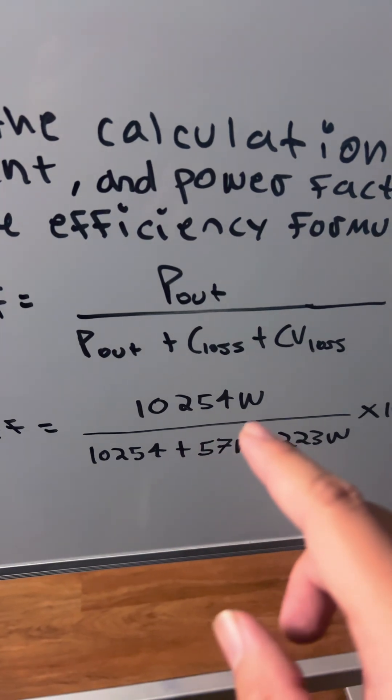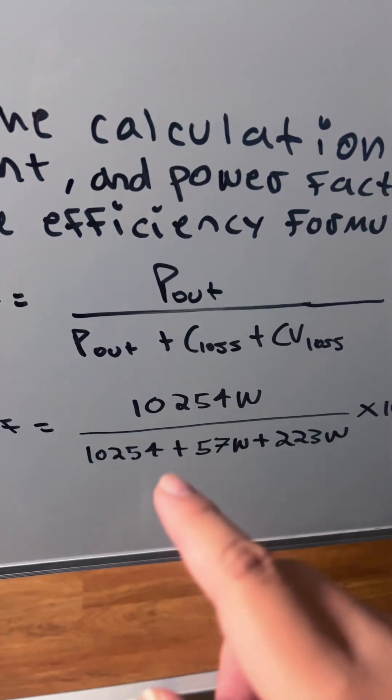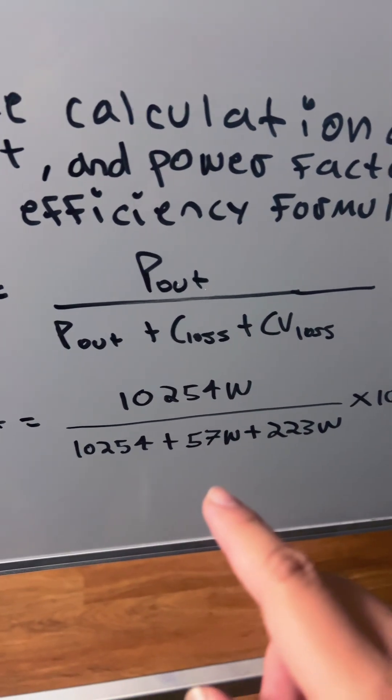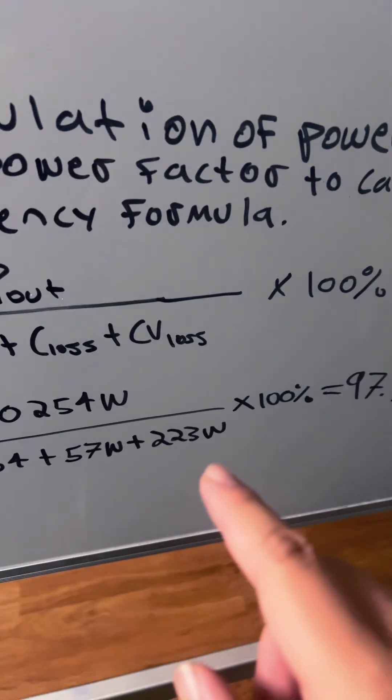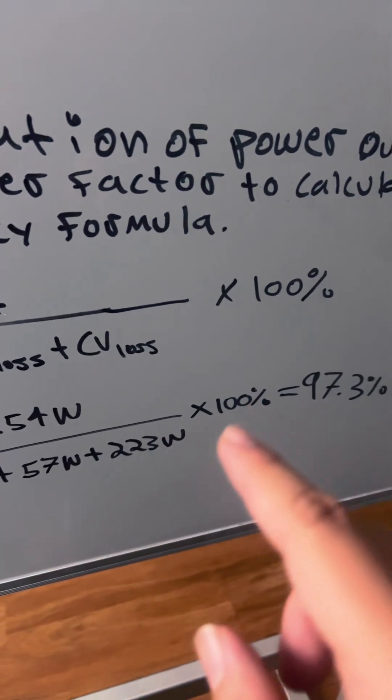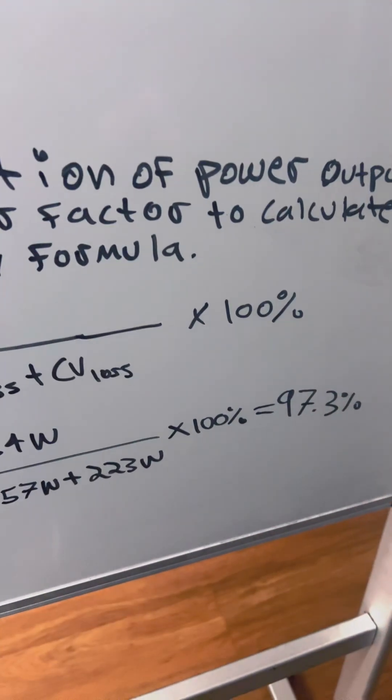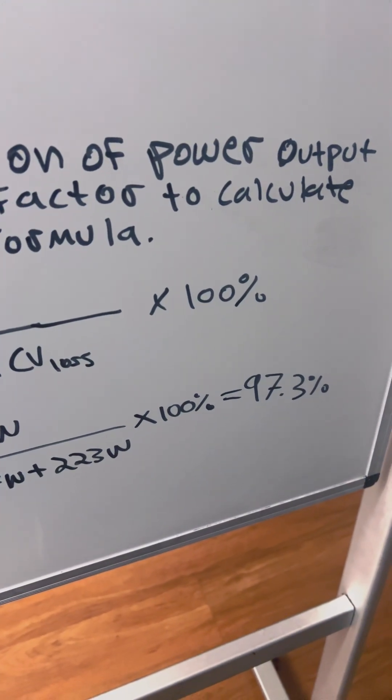It's 10,254W ÷ (10,254 + 57W + 223W) × 100% = 97.3%.